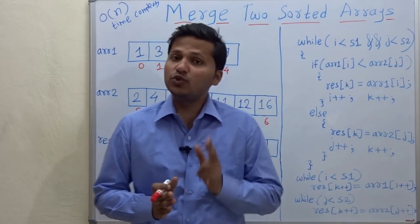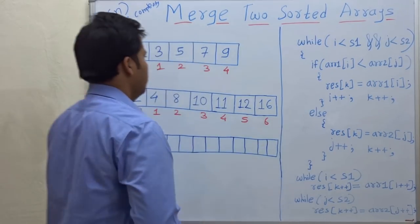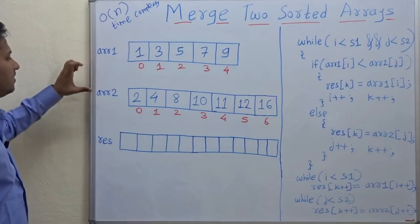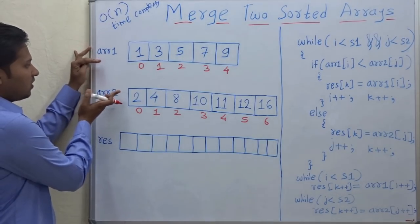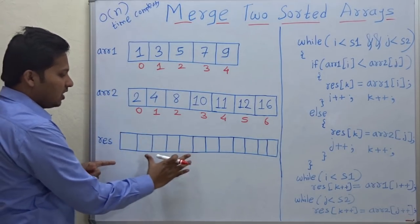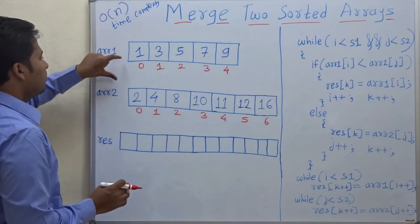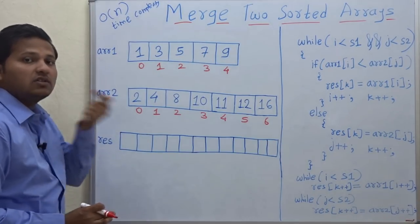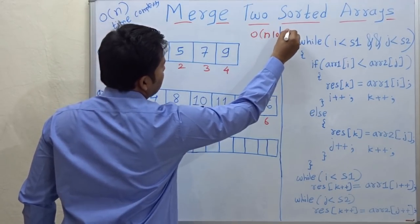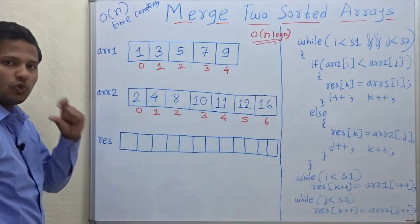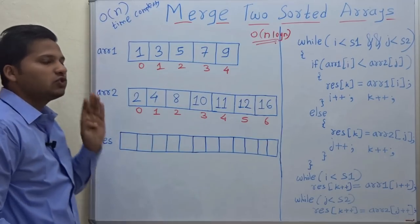Hello friends, today we are going to see how to merge two sorted arrays into a third sorted array. Array 1 and Array 2 are both sorted, and we want to merge them into a result array which is also sorted. One option is to merge and then sort the resultant array, but that takes O(n log n) time complexity. We have a solution that works in O(n) time complexity.